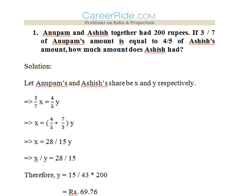The first question: Anupam and Ashish together had 200 rupees. If 3/7 of Anupam's amount is equal to 4/5 of Ashish's amount, how much amount does Ashish have? We know the total amount is 200 rupees but we don't know how much Anupam has and how much Ashish has.